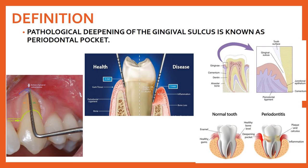What is the definition of periodontal pocket? It is the pathological deepening of the gingival sulcus, and this is known as periodontal pocket. The gingival sulcus is a shallow crevice or space which is present around the tooth, bounded by the tooth on one side and by the gingiva on the other side.